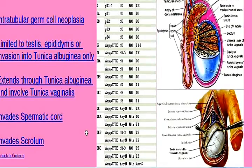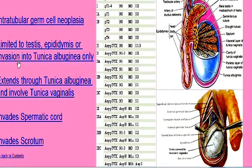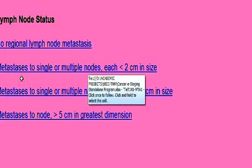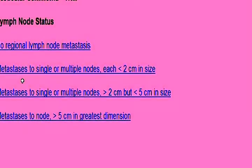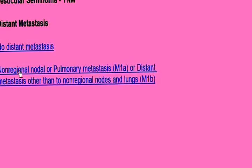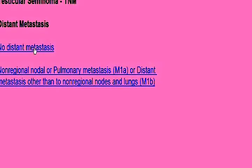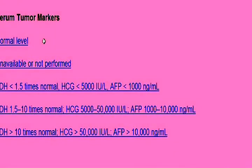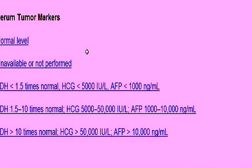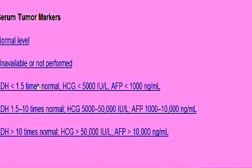Once we come to the lymph node status page, let's say this patient has a few lymph nodes but all of them are less than two centimeters. This brings us to the metastasis page — there are no metastases, but here we have another option: the serum tumor markers, which can be either HCG, alpha-fetoprotein, or LDH. Let's say the values correspond to S2, so we click on S2. The stage of the tumor is Stage 3B.